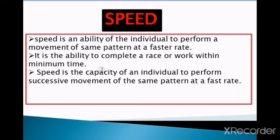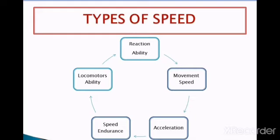There are five types of speed: reaction ability, movement speed, acceleration, speed endurance, and locomotor ability. We will discuss each one by one.